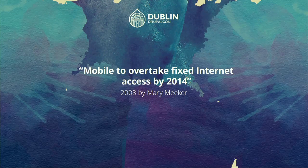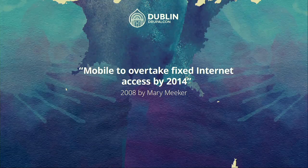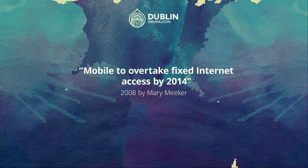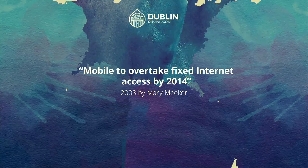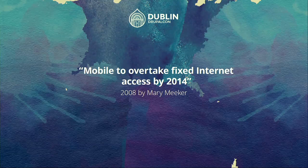First, we are going to check that statement that Mari Mikke made in 2008, saying that mobile was going to overtake fixed internet access by the year 2014. And it was something like that, because last year in the States it was around 70% of traffic for mobiles, and in the UK it was around 66%.